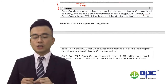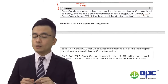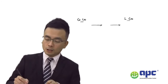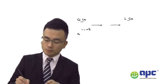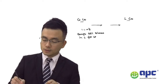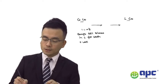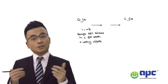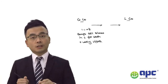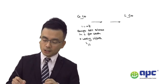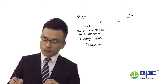On 1st January X7, G company purchased 35% of the share capital and voting rights of L company for cash. Since 35% is less than 50%, this suggests significant influence over L company's operating and financing policies, meaning at this stage L company is highly likely our associate.